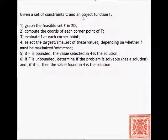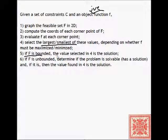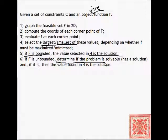Let's consider a graphing procedure. Given a set of constraints C and objective function f: first, graph the feasible set in 2D; second, compute the coordinates of each corner point; third, evaluate f at each corner point; fourth, select the largest or smallest value depending on whether we are solving a maximization or minimization problem. If F is bounded, we've found the solution. If F is unbounded, determine whether the problem is solvable — a procedure for that will be covered in the next screencast.